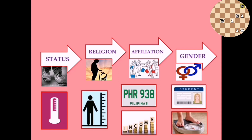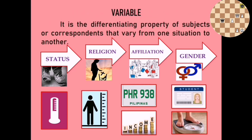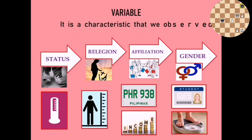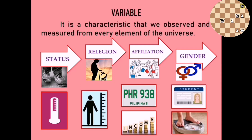We can classify these data because they deal with the subjects or respondents, and we call them variables. A variable is the differentiating property of subjects or respondents that varies from one situation to another, or it is a characteristic that we observe or measure from every element of the population.